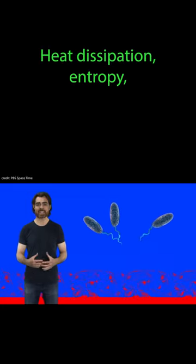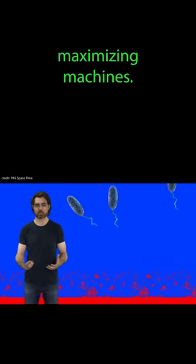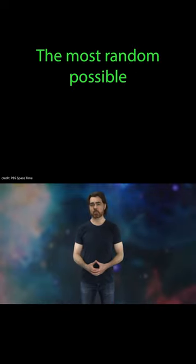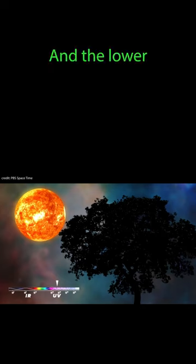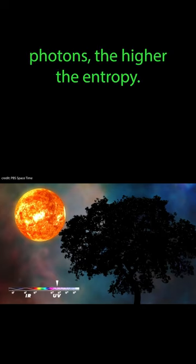Living things are incredible heat dissipation entropy maximizing machines. The most random possible form for energy is thermal radiation. And the lower the energy of its component photons, the higher the entropy.